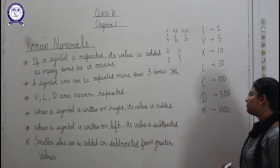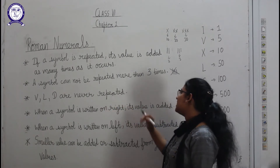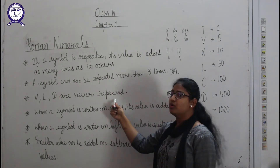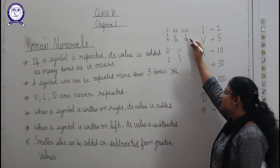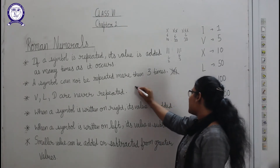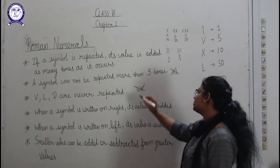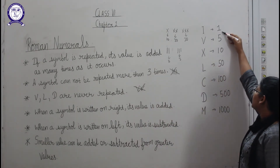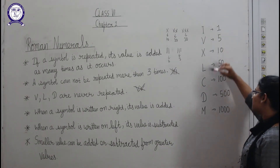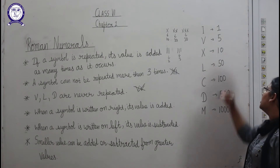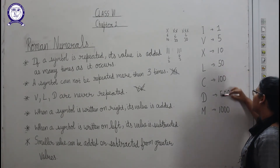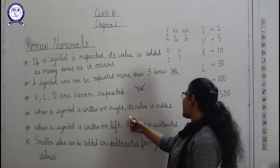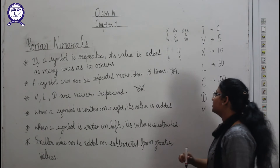The next rule is that V, L, and D are never repeated. So I can repeat I and X, but V, L, and D cannot be repeated. X, I, C, and M can be repeated, but V, L, and D will never repeat.